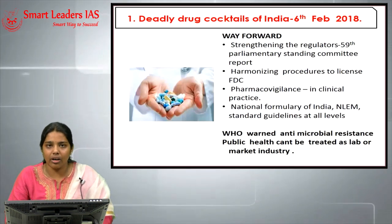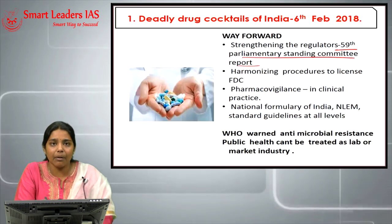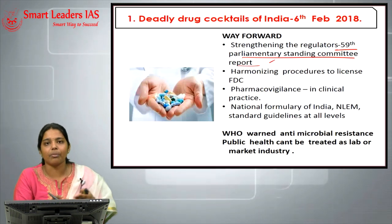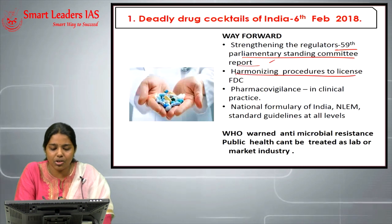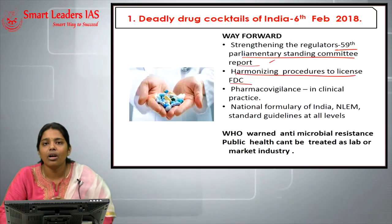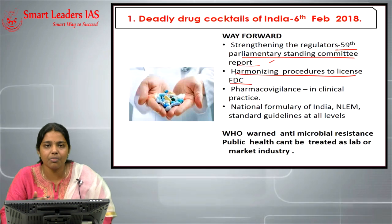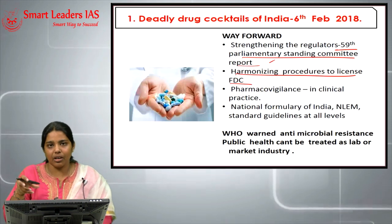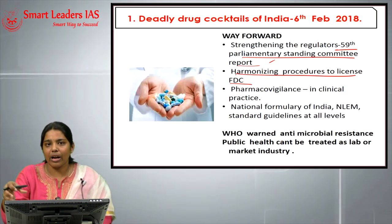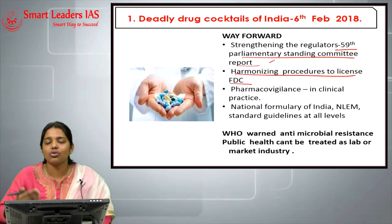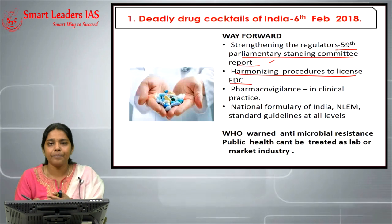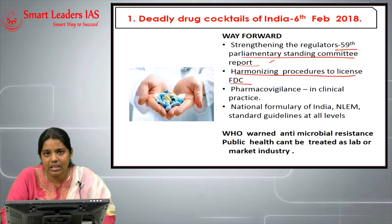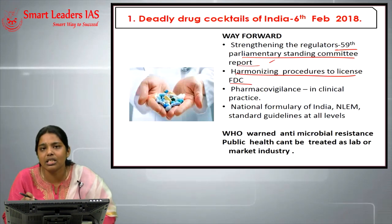To arrest irrational use of fixed dose combinations, we need to strengthen our regulator, as recommended by the 59th Parliamentary Standing Committee report. We also need to harmonize procedures to license FDCs — as of now there is no harmonized policy integrating state-level and central-level policies into a framework licensing policy for FDCs. In clinical practice, pharmacovigilance is completely absent, and additional inspectors are recommended.